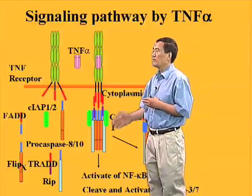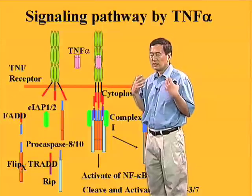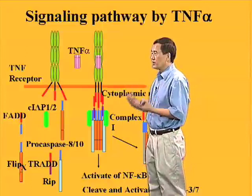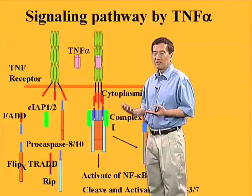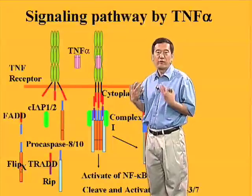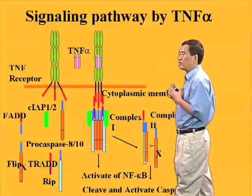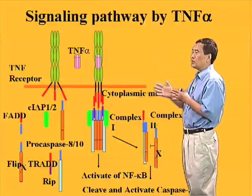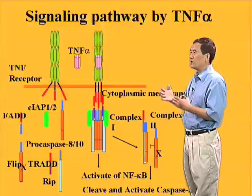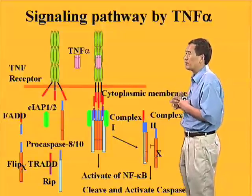Activation of NF-κB is actually good for cell survival, because targets of NF-κB include FLIP. As I showed before, if the level of FLIP is high, it is able to antagonize caspase-8 activation.